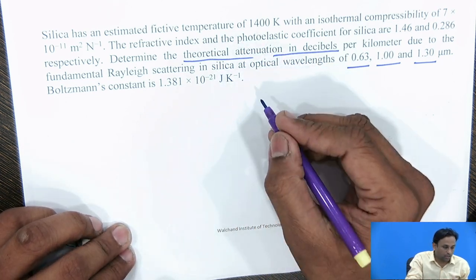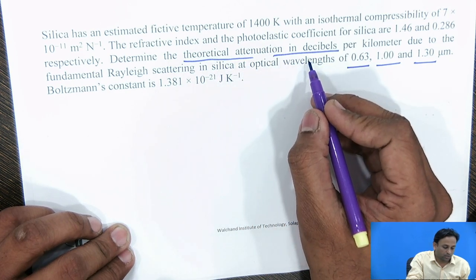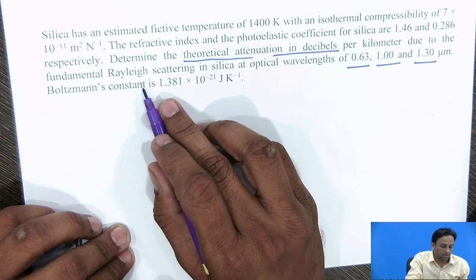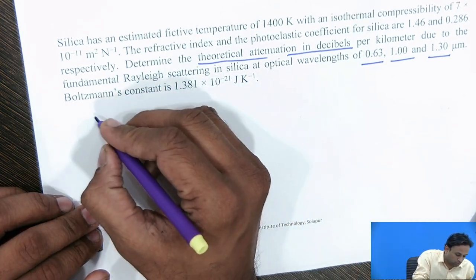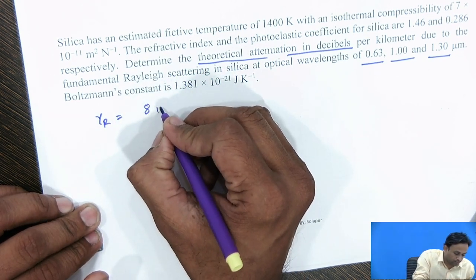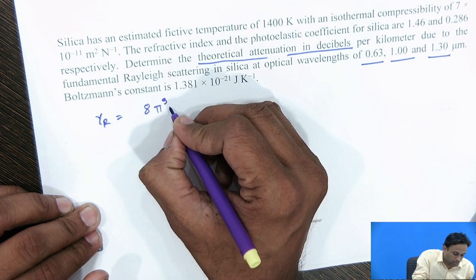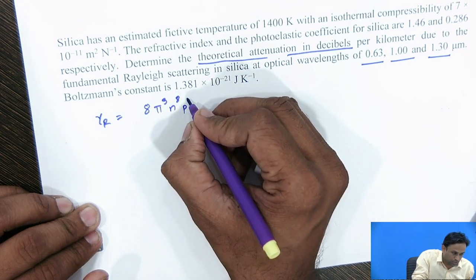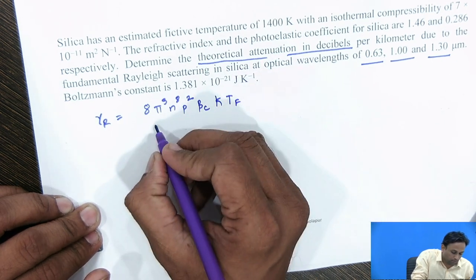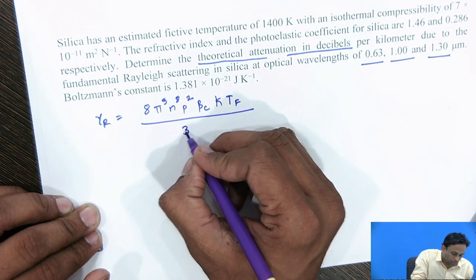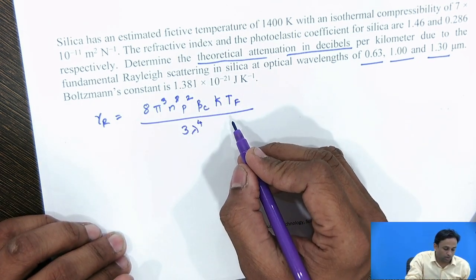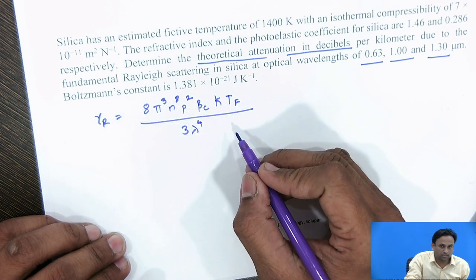Recall how to solve for the theoretical attenuation in dB per kilometer due to fundamental Rayleigh scattering. For that, the formula is: gamma R equals 8π³ n⁸ p² β_c k_B T_f divided by 3 λ⁴. By using this formula, we will calculate the fundamental Rayleigh scattering coefficient.